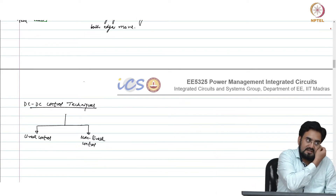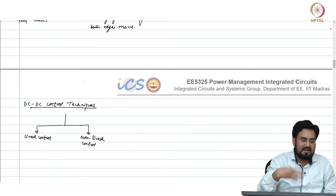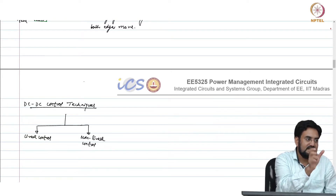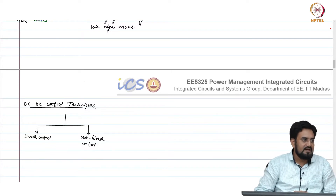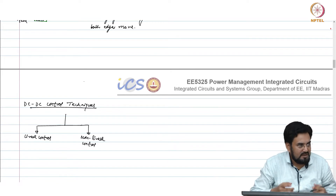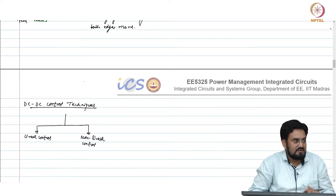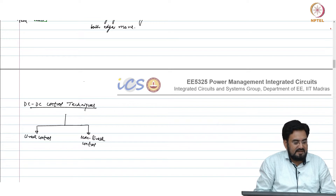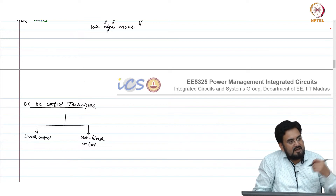So IR drop will change, which means duty cycle has to change. We already looked at how much delta D will be required in order to compensate for those losses. That is why you need a feedback control.